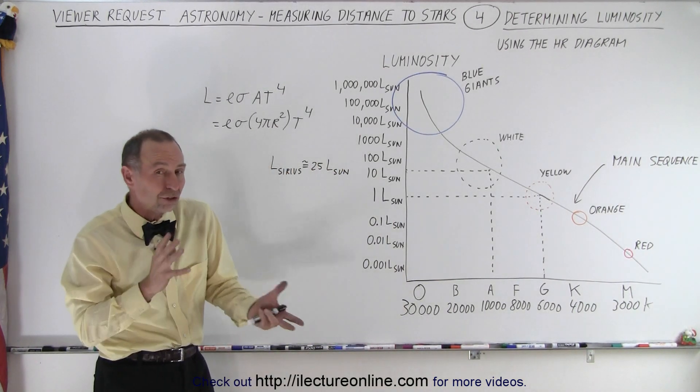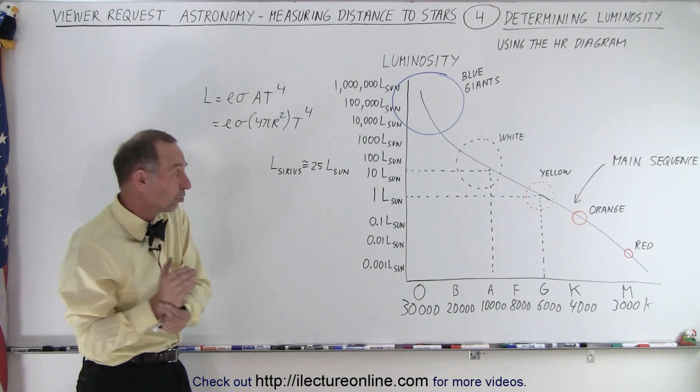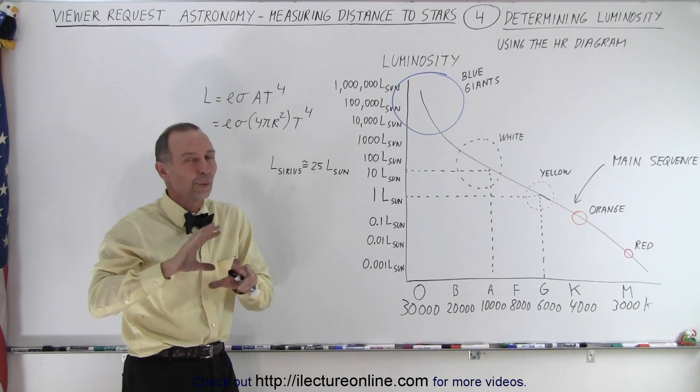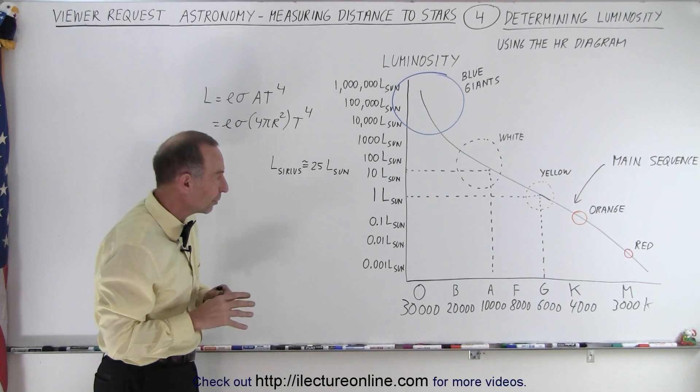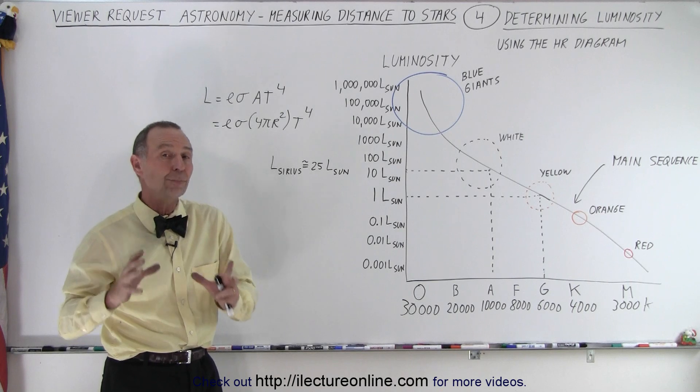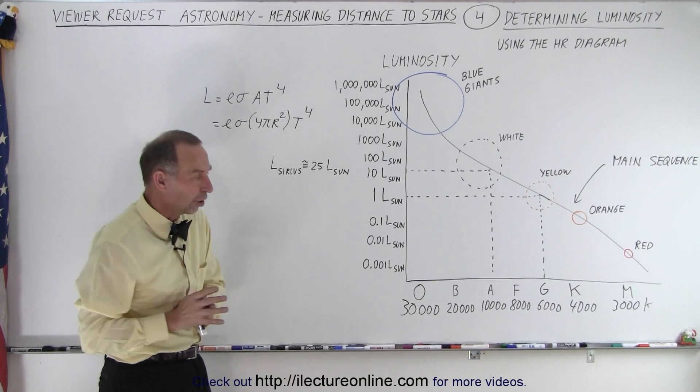So it's essentially a relationship between where in the main sequence a star is and what the brightness or the luminosity of the star is with some modifications, some adjustments and then once we have that we're now ready to calculate the absolute magnitude of the star.